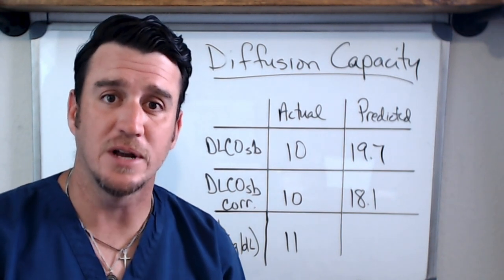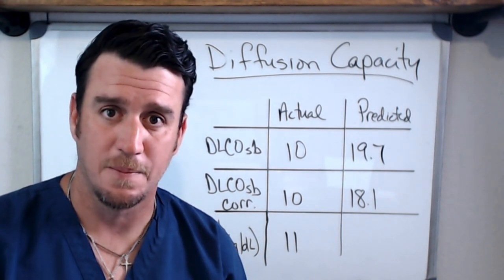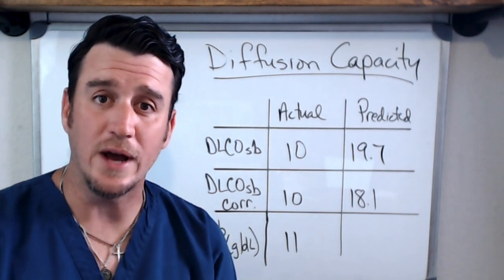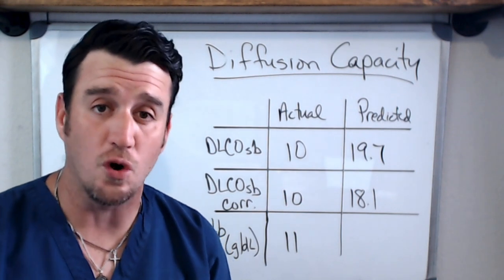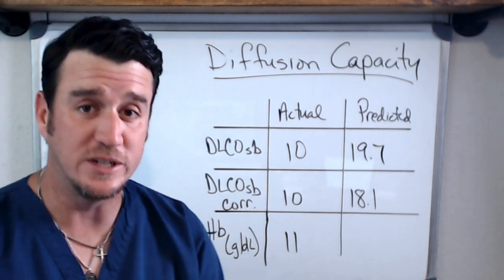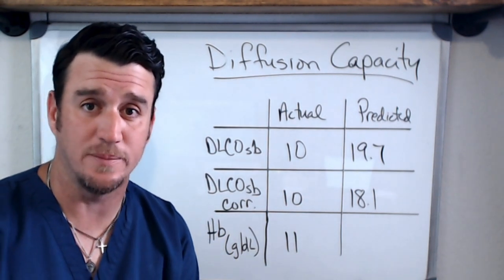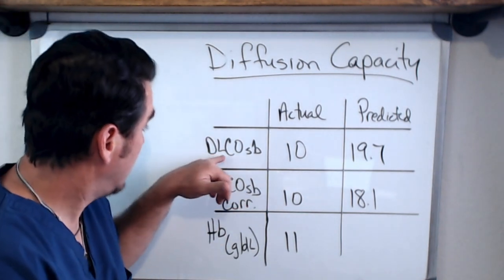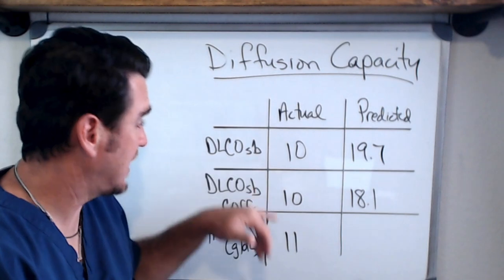Now what we need to understand is what is normal and what is abnormal. So a normal DLCO, which is what we're talking about when we talk about diffusing capacity, diffusion lung capacity of carbon monoxide DLCO, and the SB stands for the single breath method.